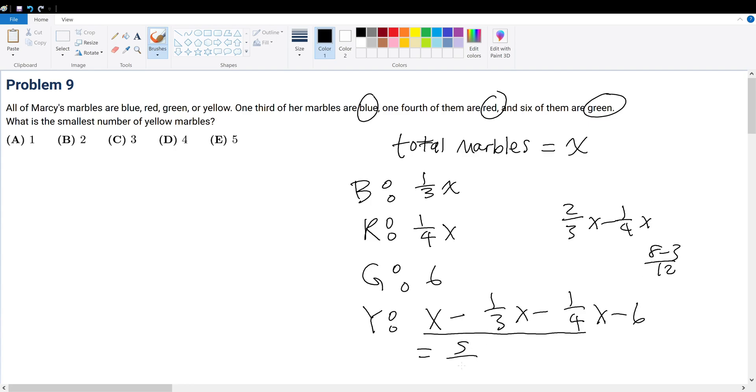So what is the smallest number of yellow marbles? Well, let's just plug it in. Five over twelve X minus six is the number of yellow marbles. So that means that this is equal to the number of yellow marbles, then X must be equal to Y plus six times twelve over five.